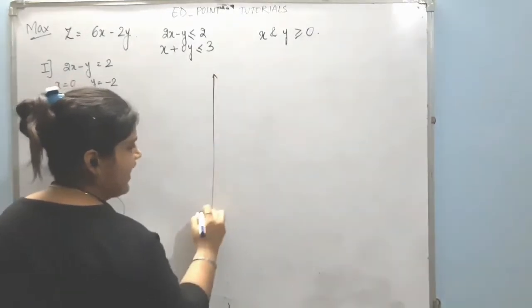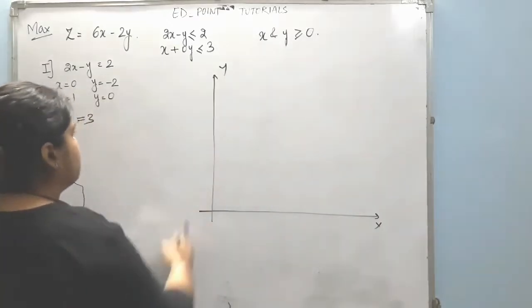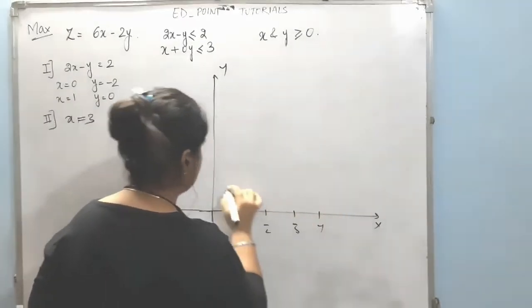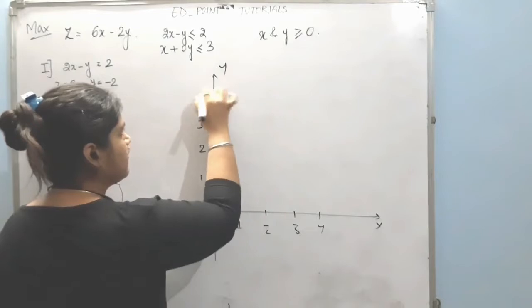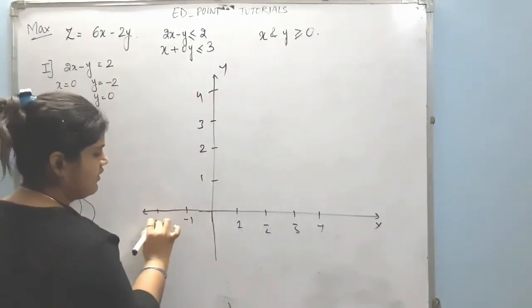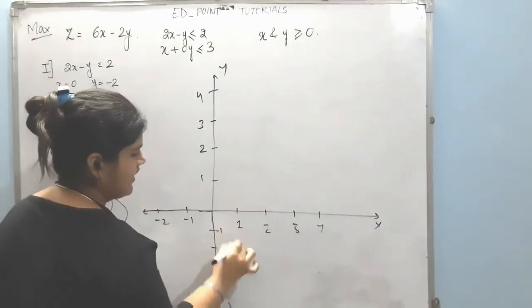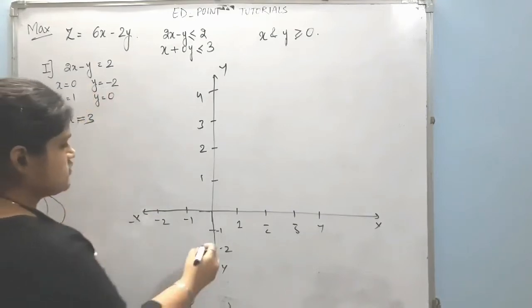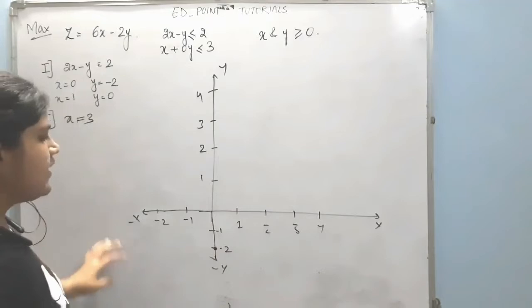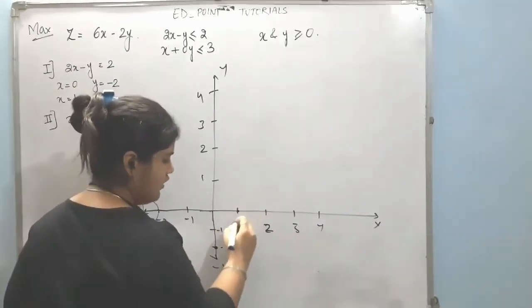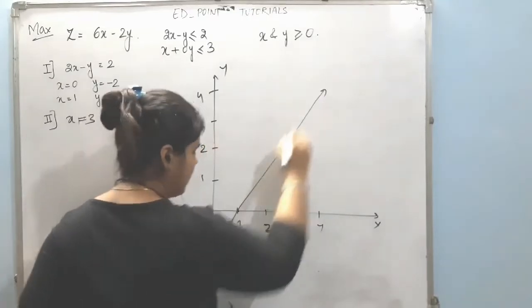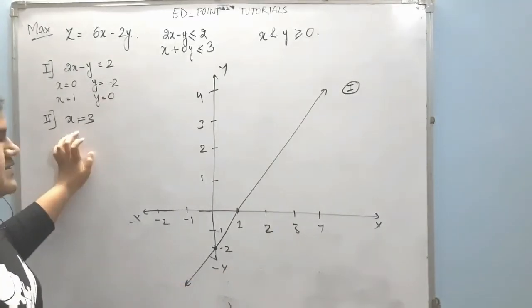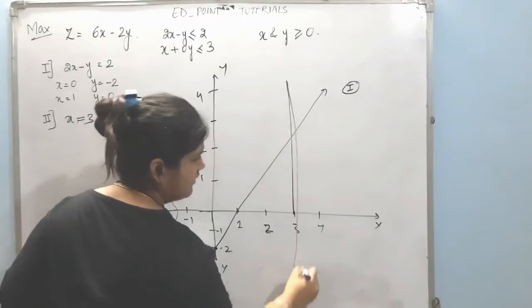Plotting this on the x and y axes: for the first equation, the points are (0, minus 2) and (1, 0). Joining these two points gives us the first constraint line. The second equation, x equals 3, gives us a vertical line at x equals 3 on the graph.